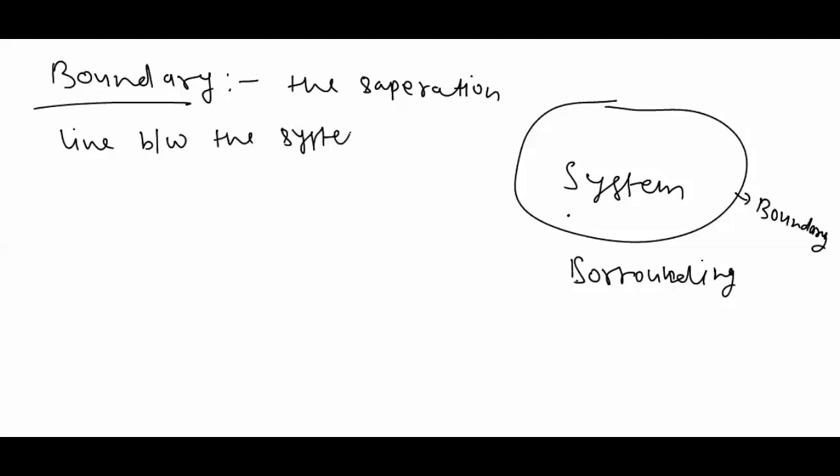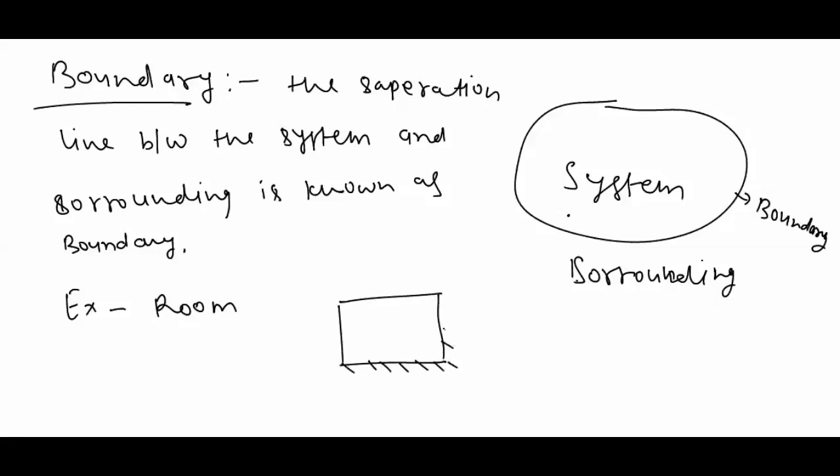If we take an example of a room, these four walls are the boundaries of the room which are completely rigid. This is a system and these are the boundaries. In this case, the boundaries are real as well as rigid.